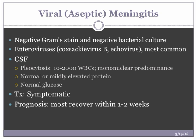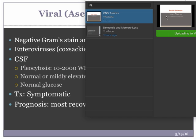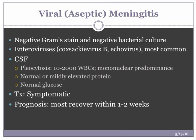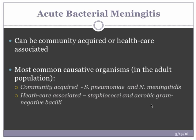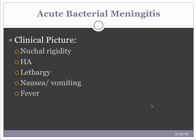Most viral meningitis patients recover within a week or two, so we focus on keeping them comfortable. Hospitalization is rarely required; prognosis is very good. We give analgesics for headaches and anti-emetics for nausea. Acute bacterial meningitis can be community-acquired or healthcare-associated. The most common causative organisms in community-acquired adult meningitis are Strep pneumo and Neisseria meningitidis.